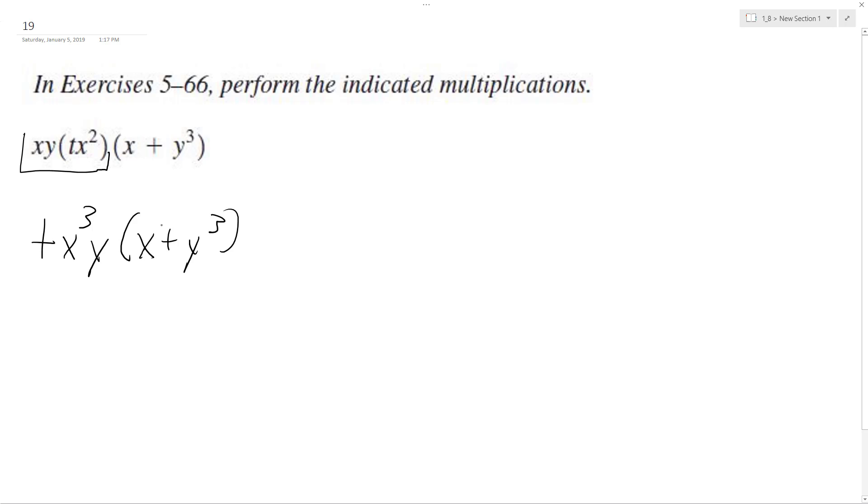So we end up here with, when we multiply across, we end up with t and then x times x to the third is x to the fourth y plus t x cubed and then y times y to the third is y to the fourth.